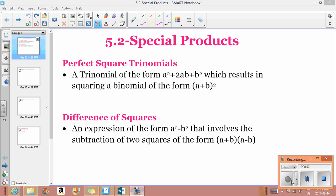In 5.2 we're going to look at some special products. These are exactly the same as 5.1 except they have special names. We can have a perfect square trinomial and a difference of squares.